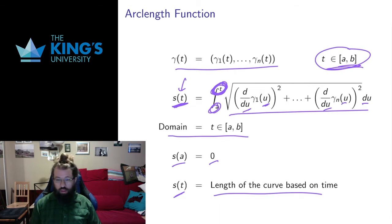And then s of t is the length of the curve based on time. s of 1 if t is in seconds will be the distance covered in one second. s of 2 will be the distance covered in two seconds. s of 3 will be the distance covered in three seconds. And then s of b will be the distance covered over the whole domain that we are considering for this parametric curve. So this is the arc length function. It takes the notion of arc length and makes it a function. We can evaluate the arc length over any moment of time in the curve to say how far are we along the curve at that time.